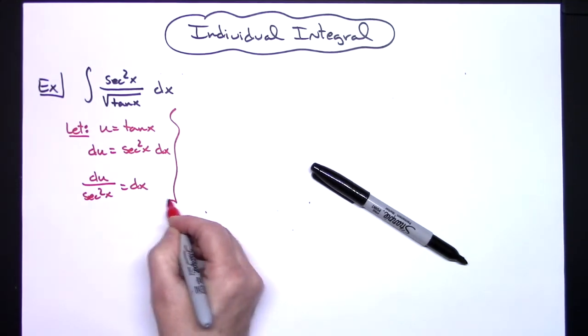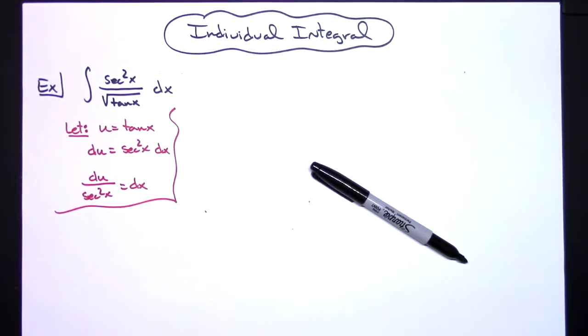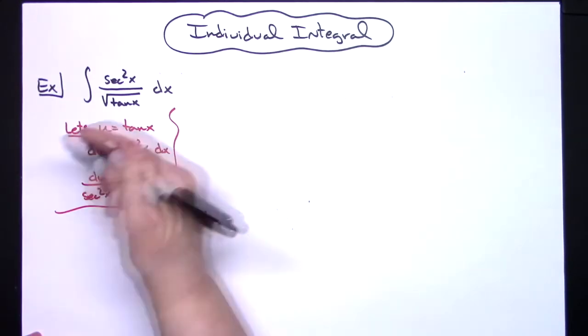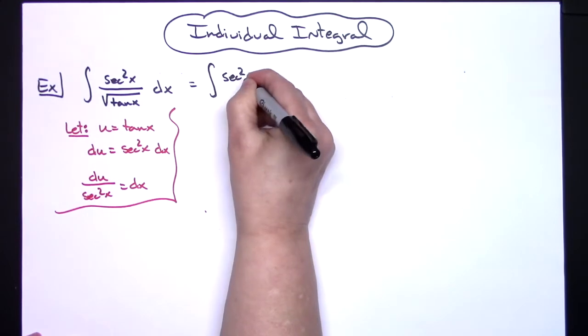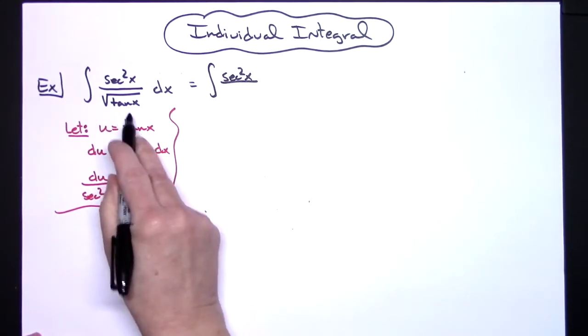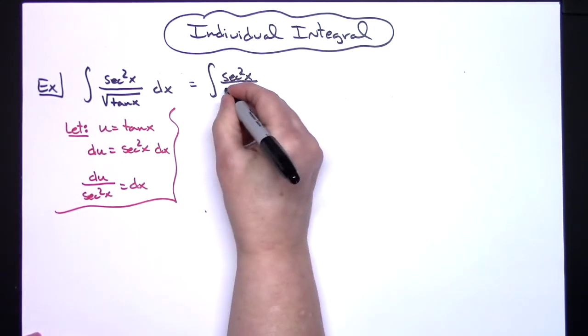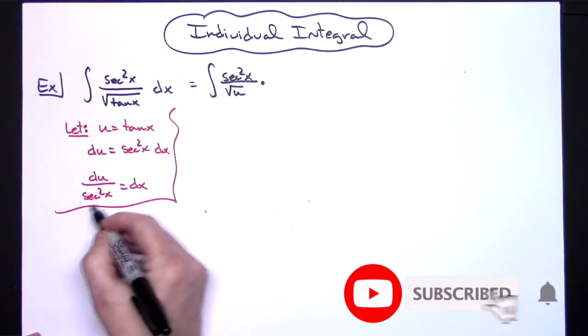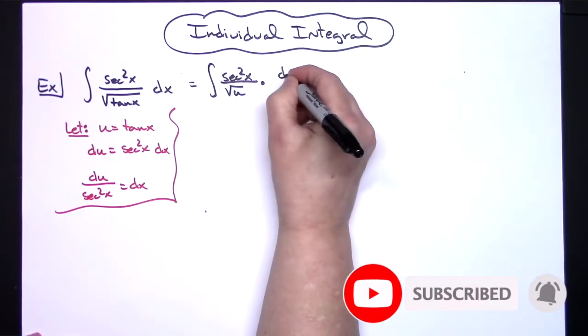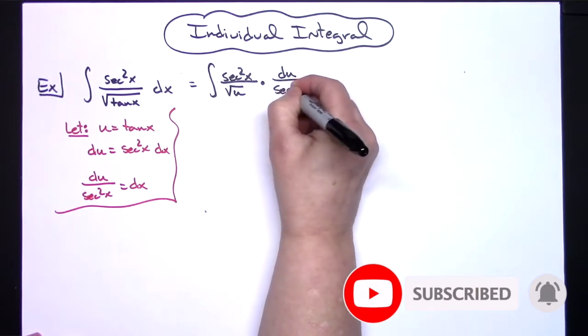Once we get to that part, we'll come back up to this original integral and start doing some substitutions. We're going to keep the secant squared x in the top, replace the tangent x with u underneath that square root, and replace the dx with what it equals as the du over secant squared x.